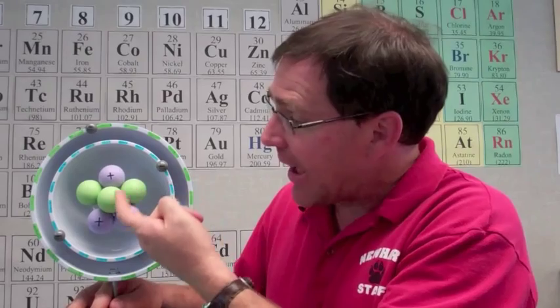So here we're actually using a modified Bohr model of an atom. And in the center here we have the nucleus. The nucleus is made up of protons and neutrons.